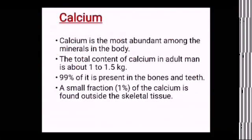Among all minerals, calcium is the most abundant in the human body. The total calcium content in an adult is about 1 to 1.5 kg. Of that, 99% is present in bones and teeth, and the remaining 1% is found outside — in body tissues and body fluids.